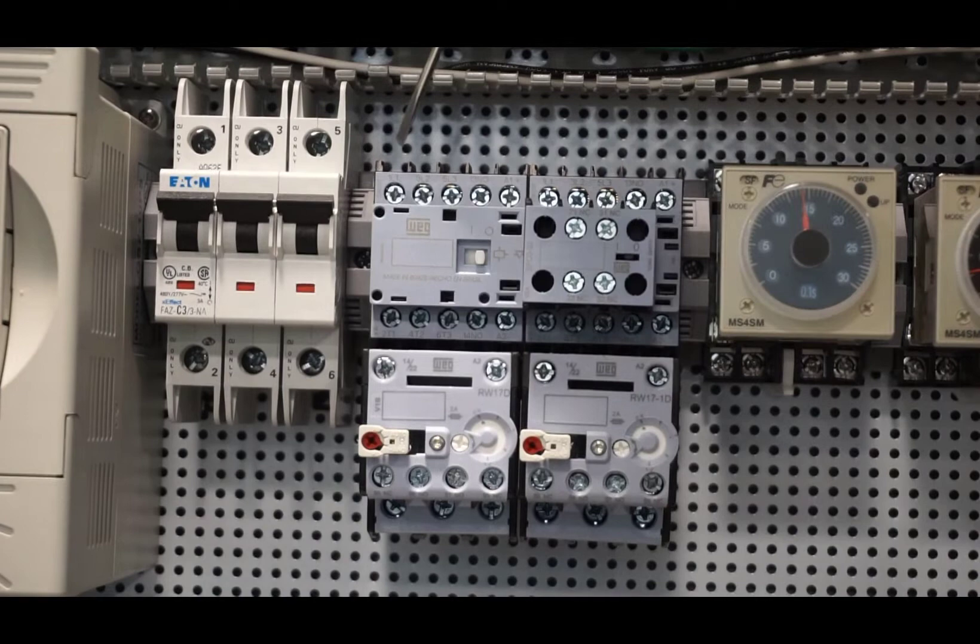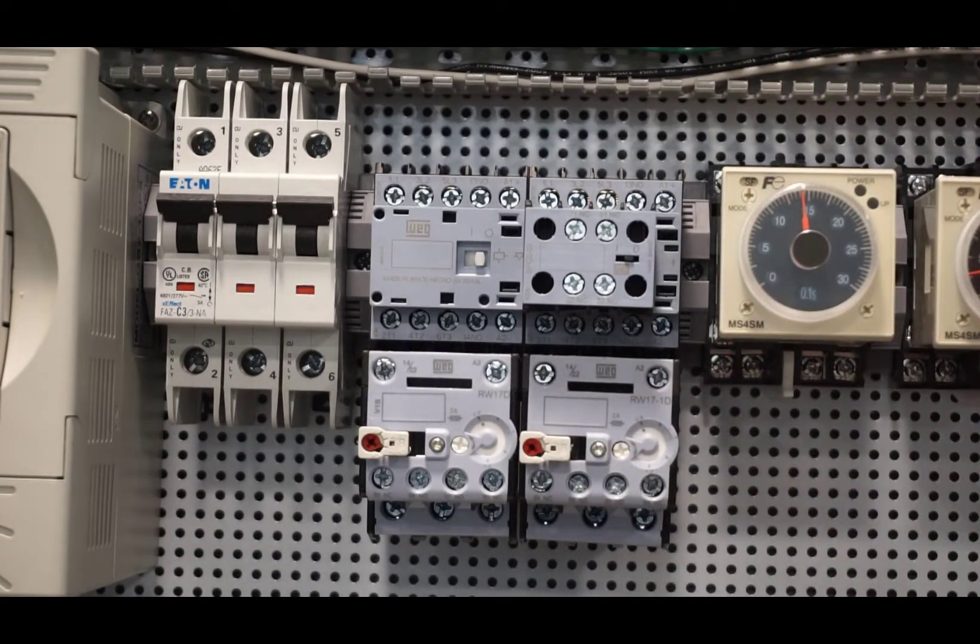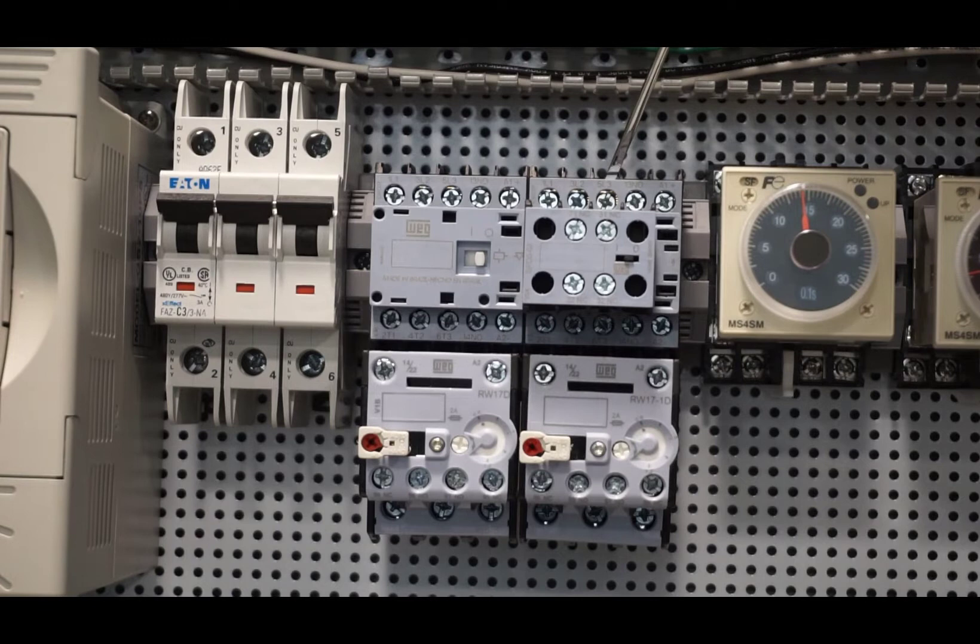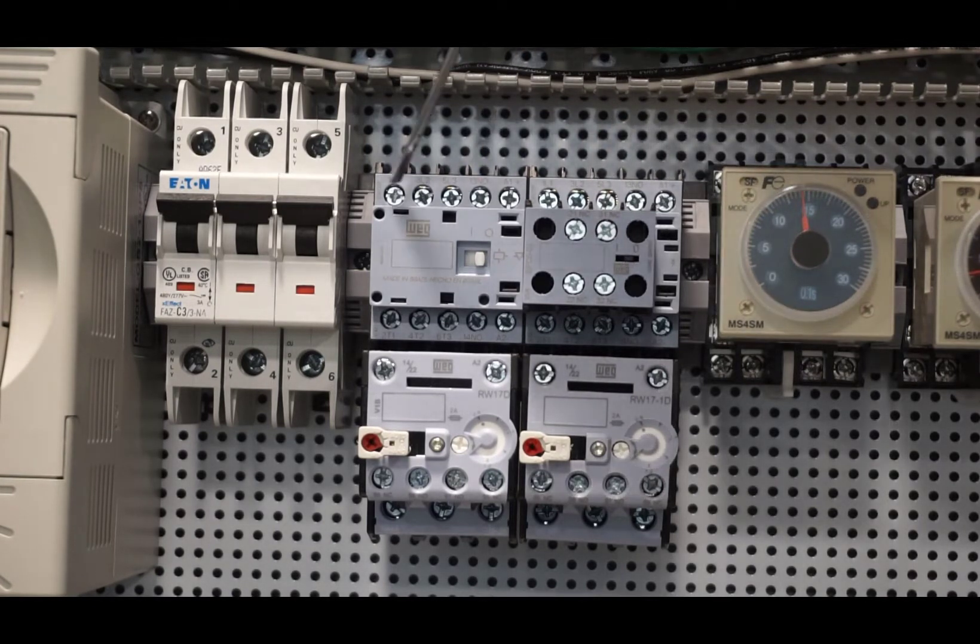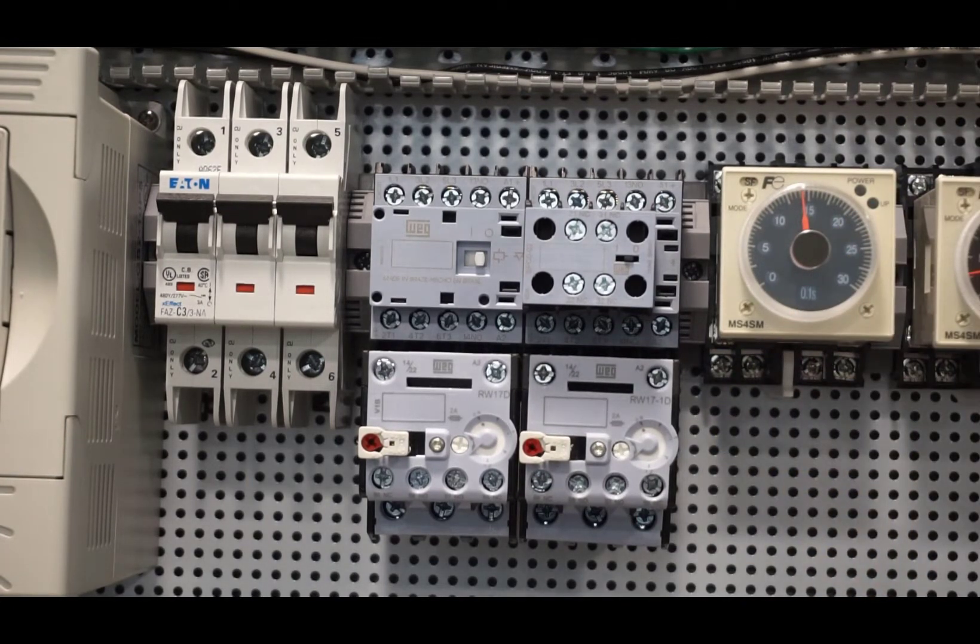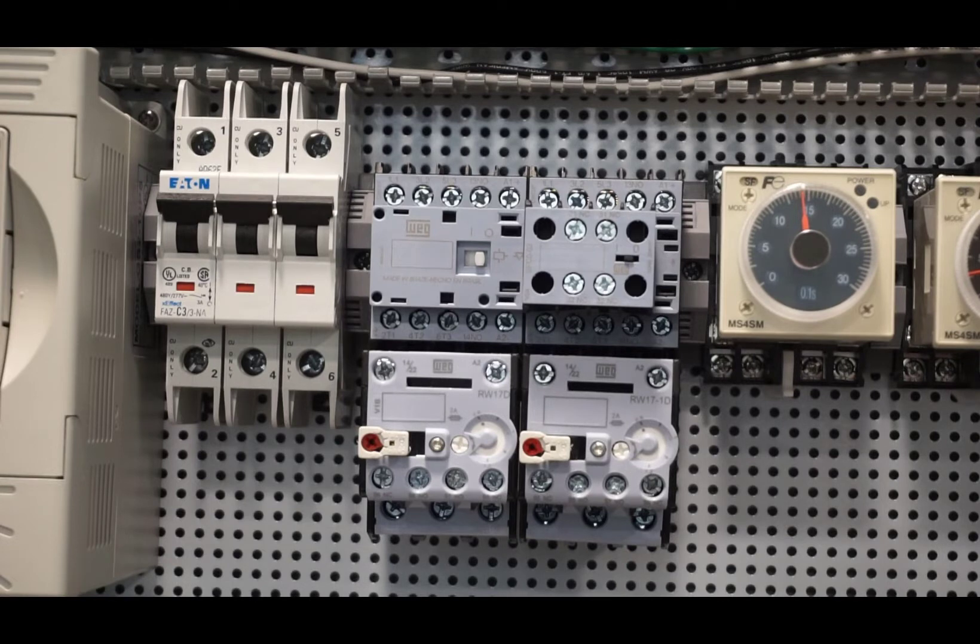The reversing starter is made up of two contactors, mechanical interlock, auxiliary contacts, and two overload relays. There's the auxiliary contact block, the mechanical interlock, and the overload relay. One set of contactor and overload relay makes up a starter.